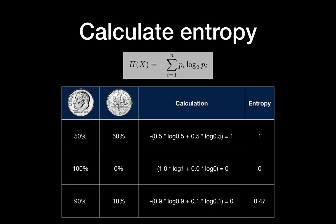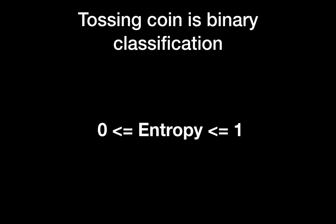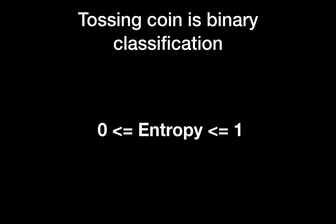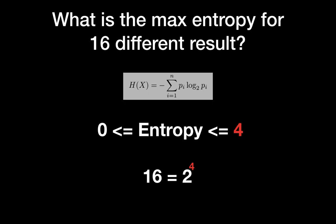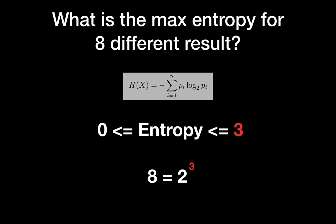So entropy shows a number representing the amount of uncertainty. A single coin toss is binary classification, and binary classification has entropy between 0 to 1. What if your classification is for 8 classes? Then you have the maximum entropy as 3. What if you have 16 classes? Then you will have the maximum entropy as 4. You may see the pattern here — 16 is 2 to the power of 4, and 8 is 2 to the power of 3.